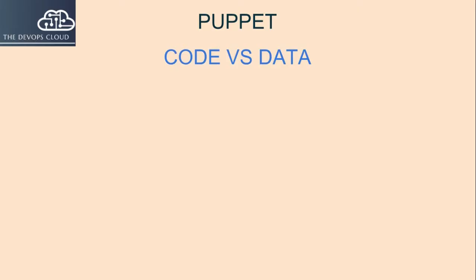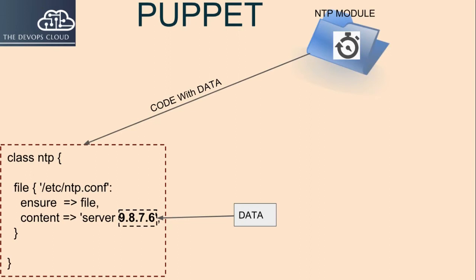What is data and what is code? To quickly summarize, a component module is a general purpose module designed to model the configuration of a piece of technology, for example Apache, Tomcat, or NTPD. And a profile is an organization-specific Puppet module that describes an organization's implementation of a piece of technology, or site-specific data referring to an organization's own particular data.